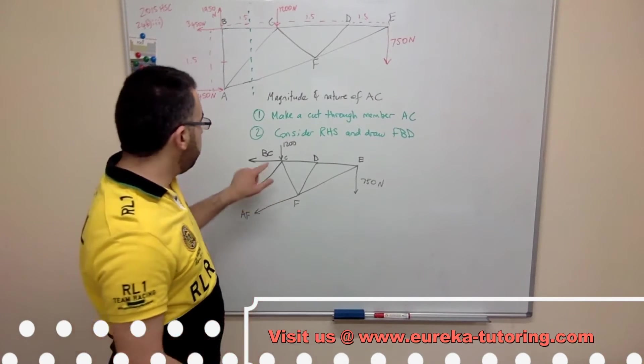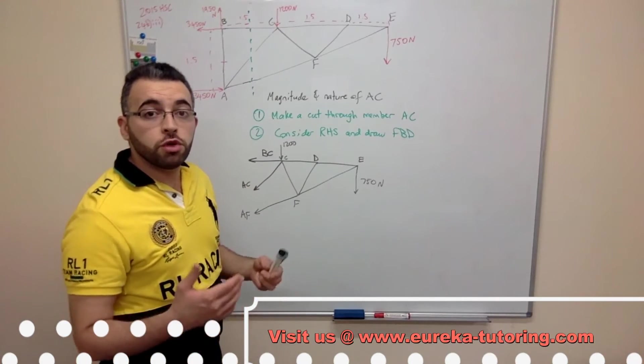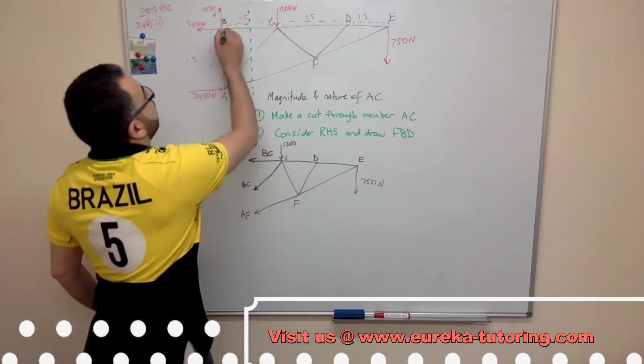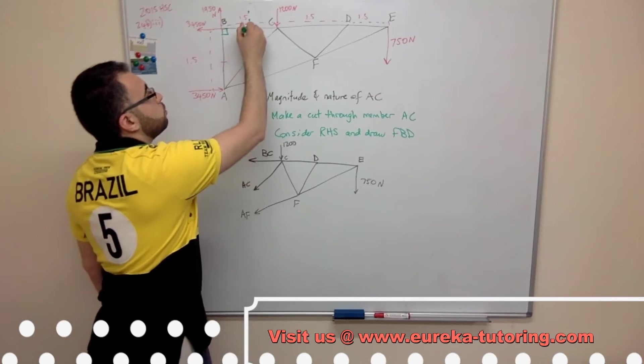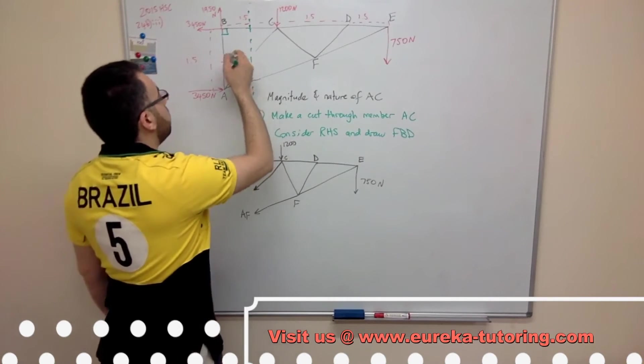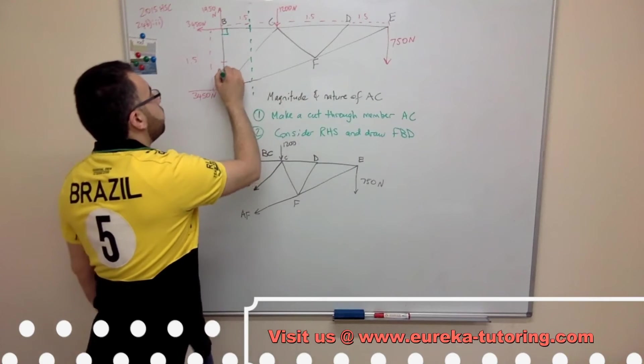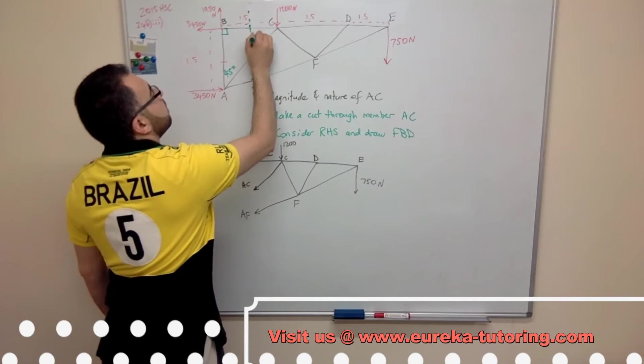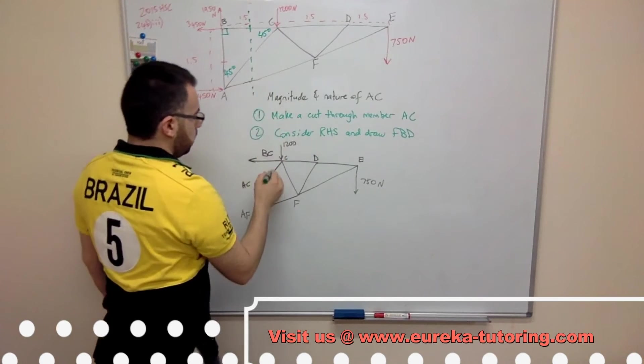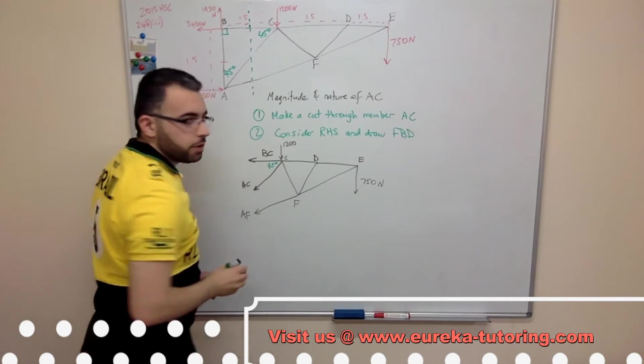But before that, we need to find this angle. When we refer to the original diagram, we have a right angle here. We know that this side is equal to this side here. It's an isosceles triangle, therefore this is 45 degrees, this is 45 degrees, and so this angle will be 45 degrees.